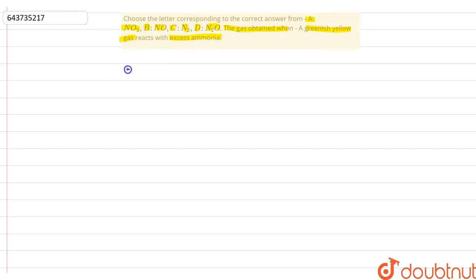So here, according to the given property, a gas which is greenish yellow, so greenish yellow gas is chlorine, that is Cl2. So here this Cl2 gas has to react with excess ammonia.